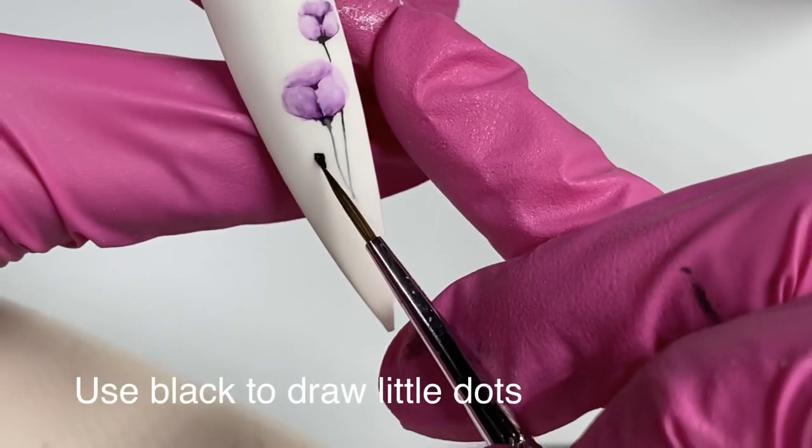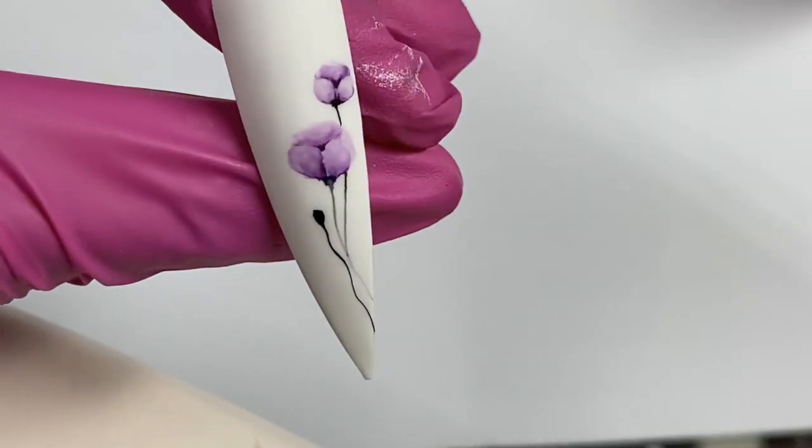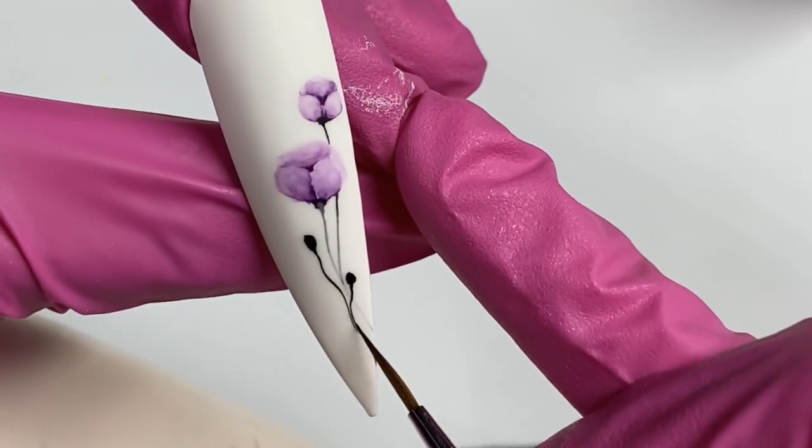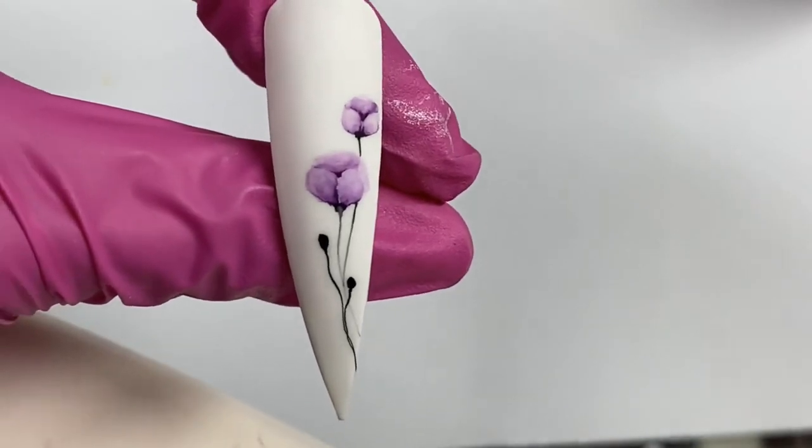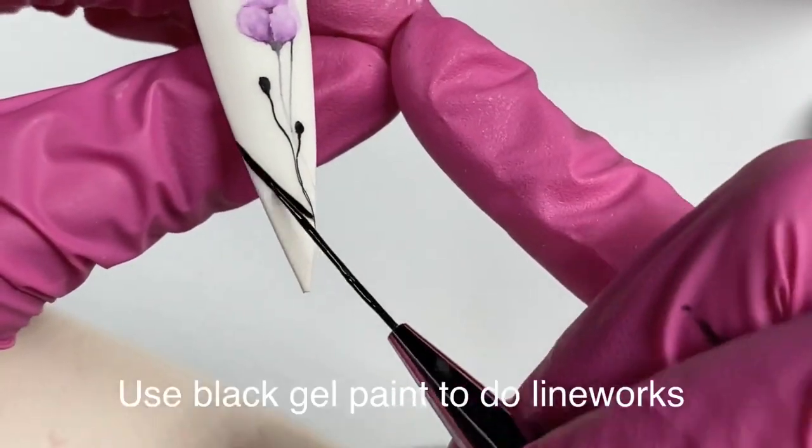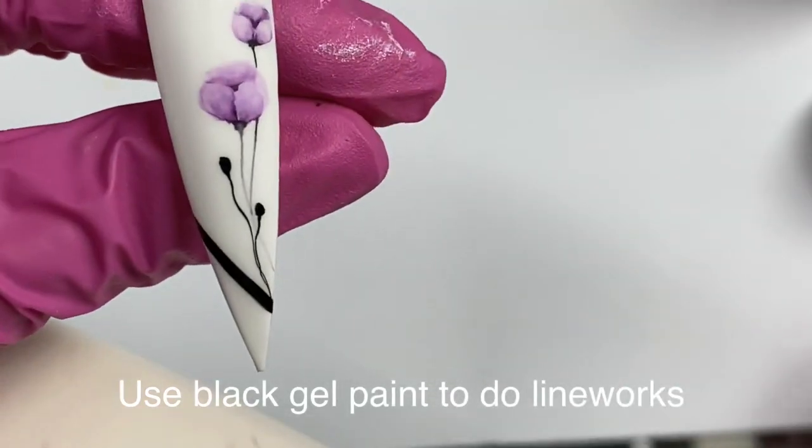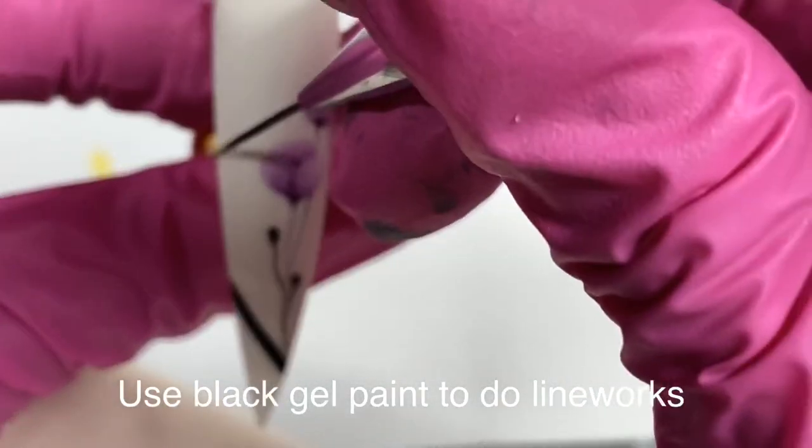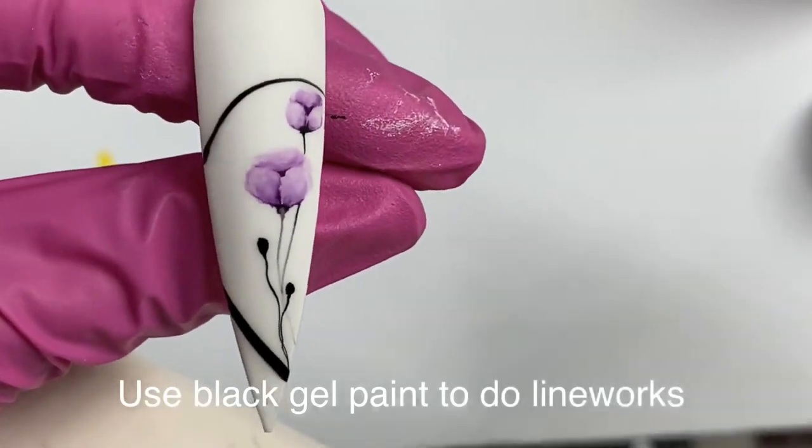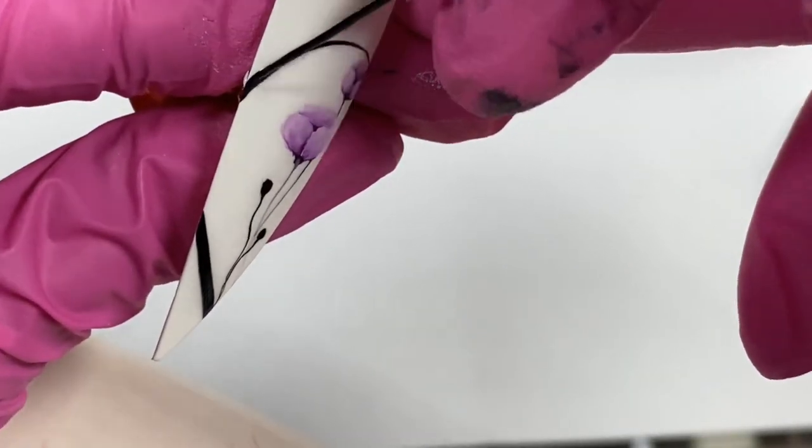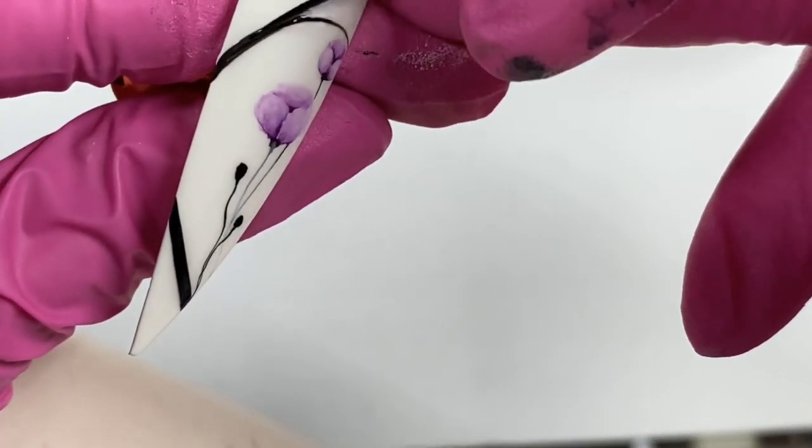Then I'll use black to make these small flowers that haven't bloomed yet. After we're done, I'll start with the line work again. You can draw however you want. Just make sure it's following the direction of the flower so the art will make sense.